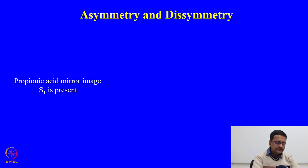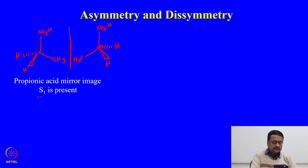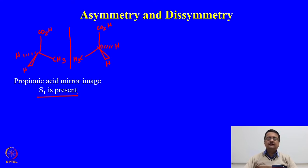Let us see three examples of three different types of molecules. The first one is propionic acid and its mirror image — a three-carbon acid with CH2 in between. What we see here is that this molecule has an S1 axis present, and as a result this molecule is a symmetric molecule, although it does not have any Cn with n greater than 1.